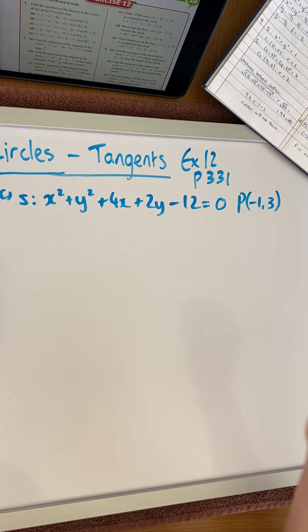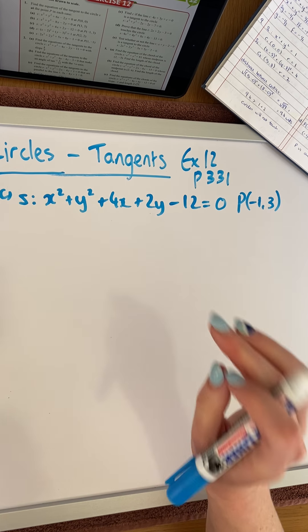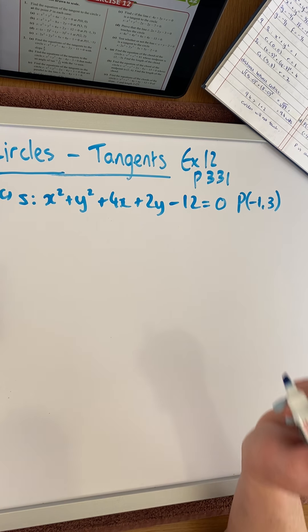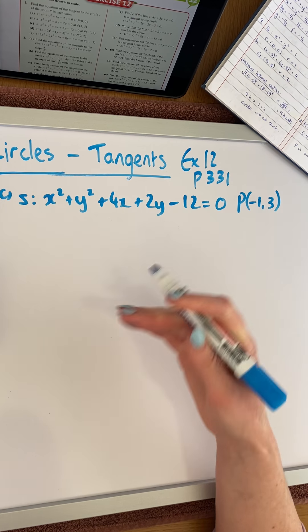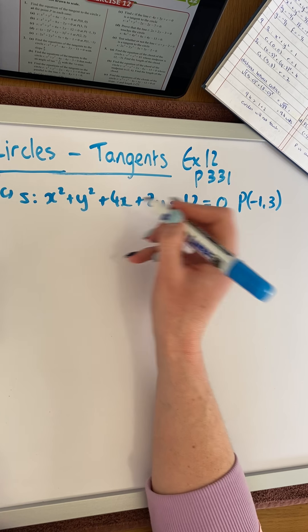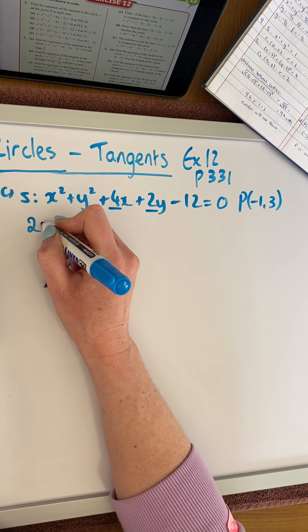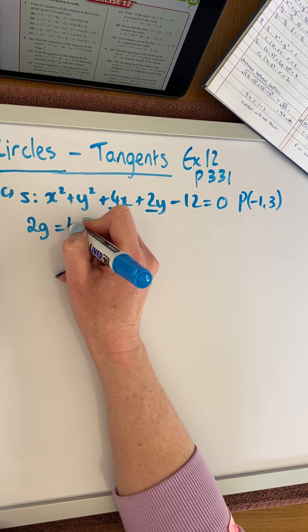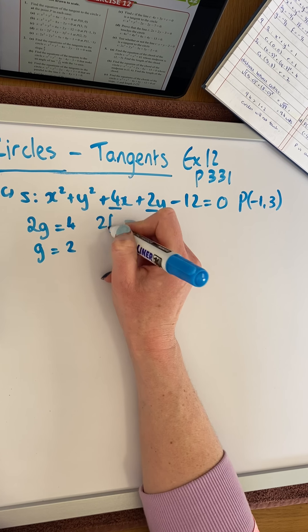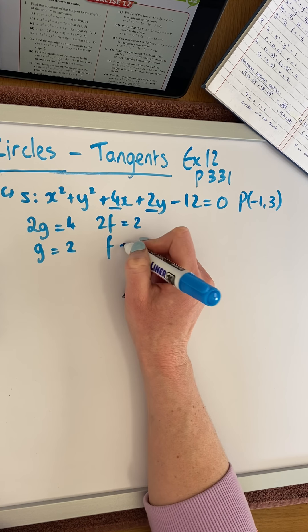The first thing we're going to need is the center of the circle. When you're given the equation of a circle like this, you should write down the center and the radius, because that information can be used in the question. To get the center, we look at the coefficient of x and y. 2g is the coefficient of x, which is 4, meaning g = 2. 2f is the coefficient of y, which is 2, so f = 1.